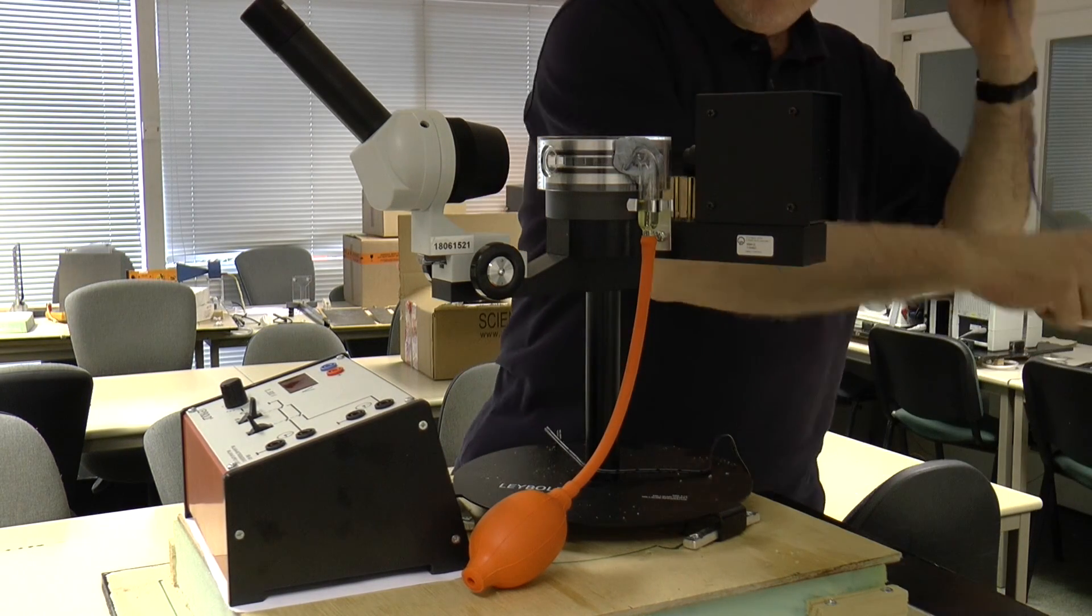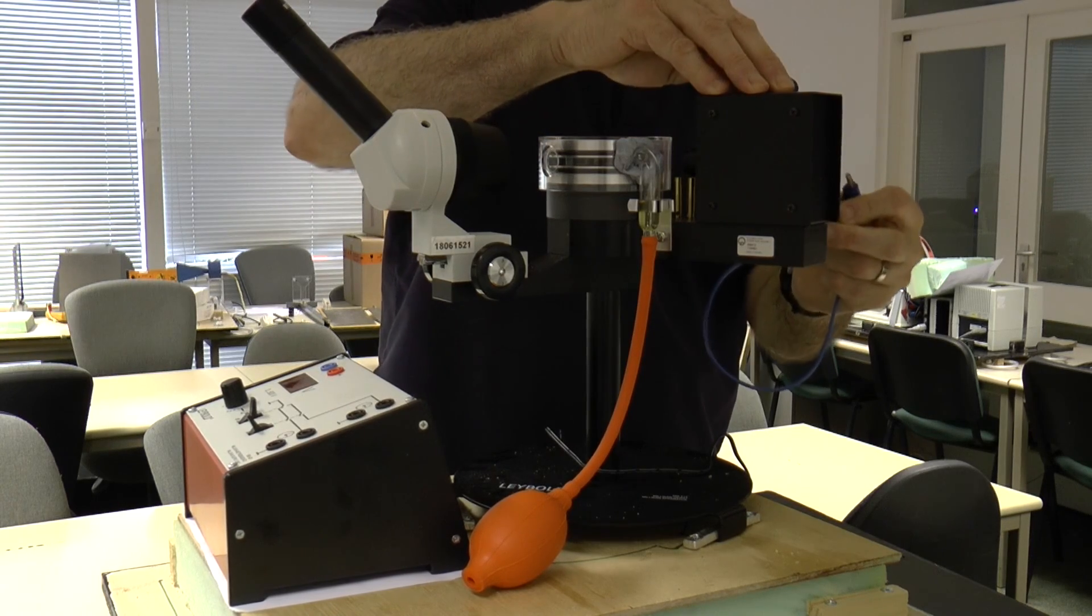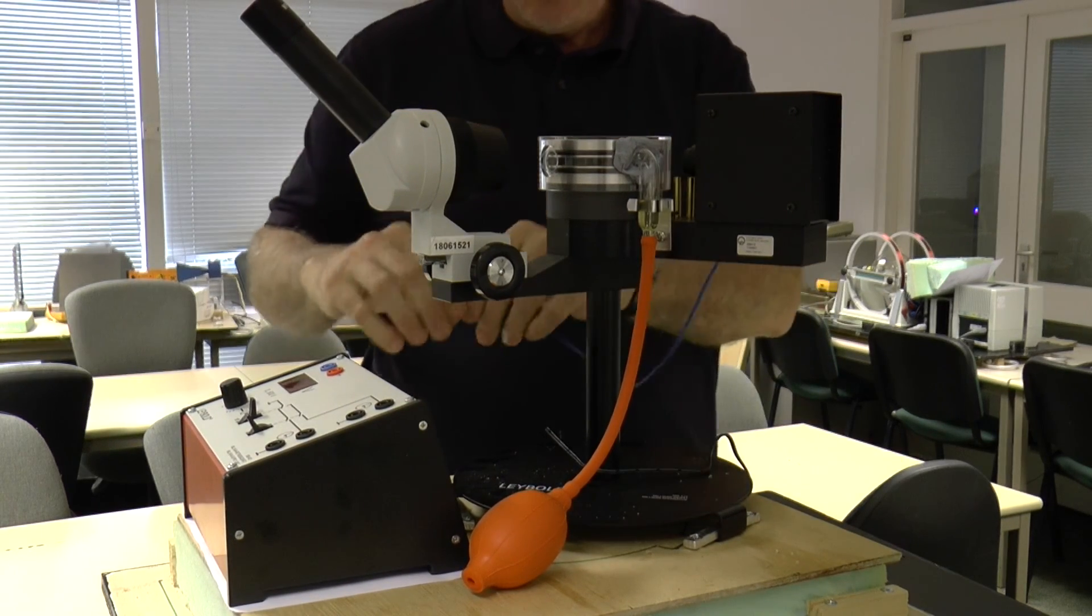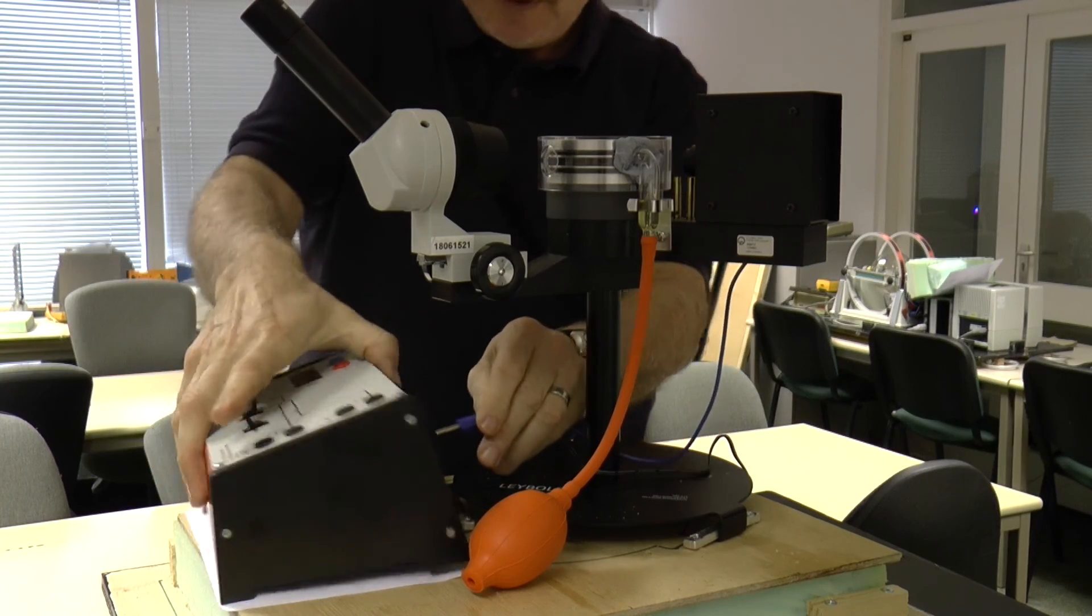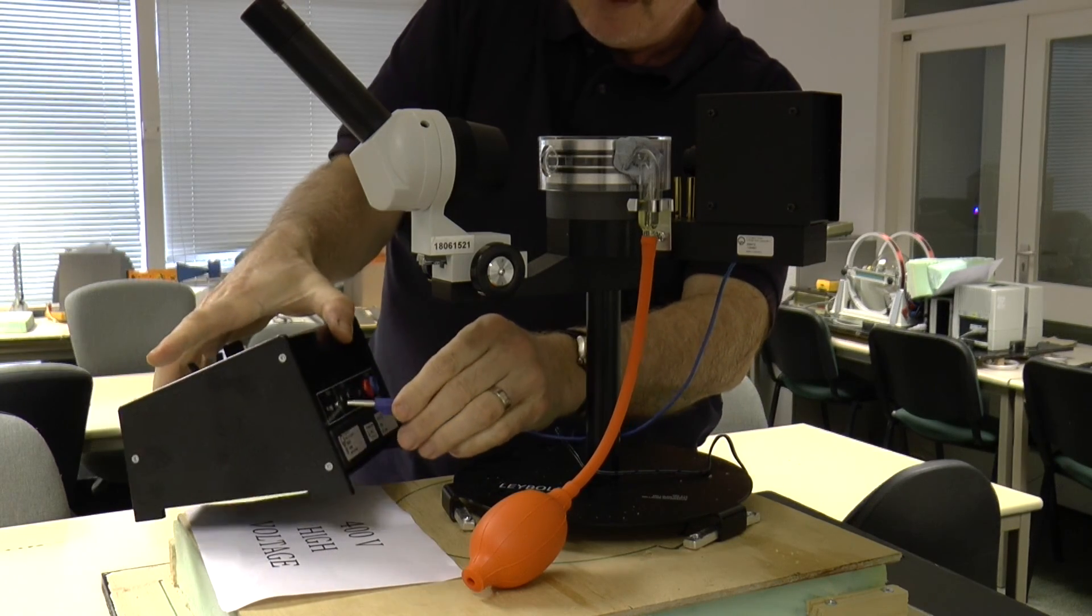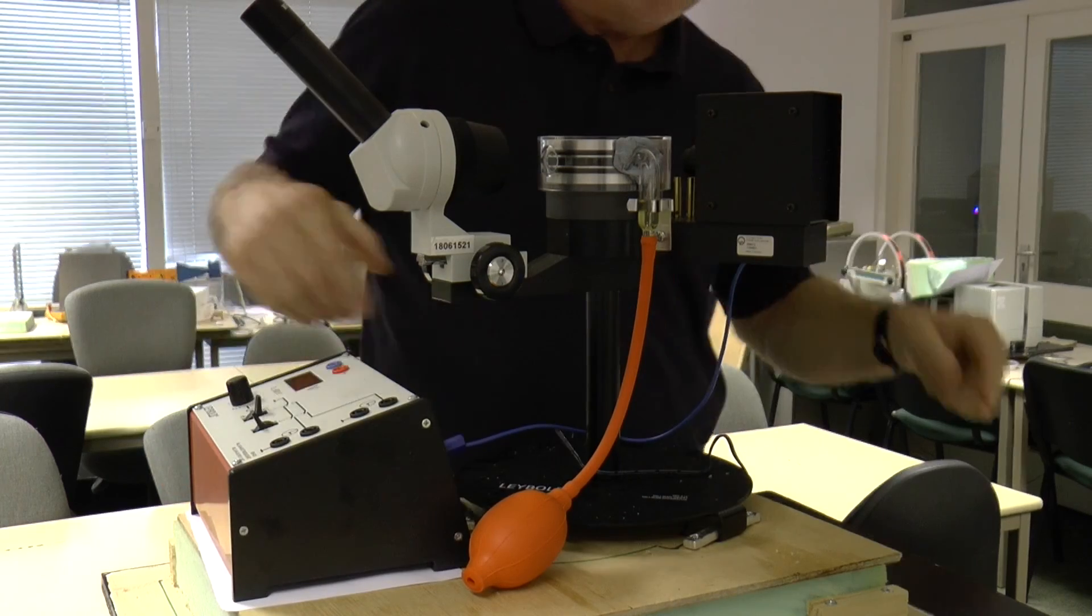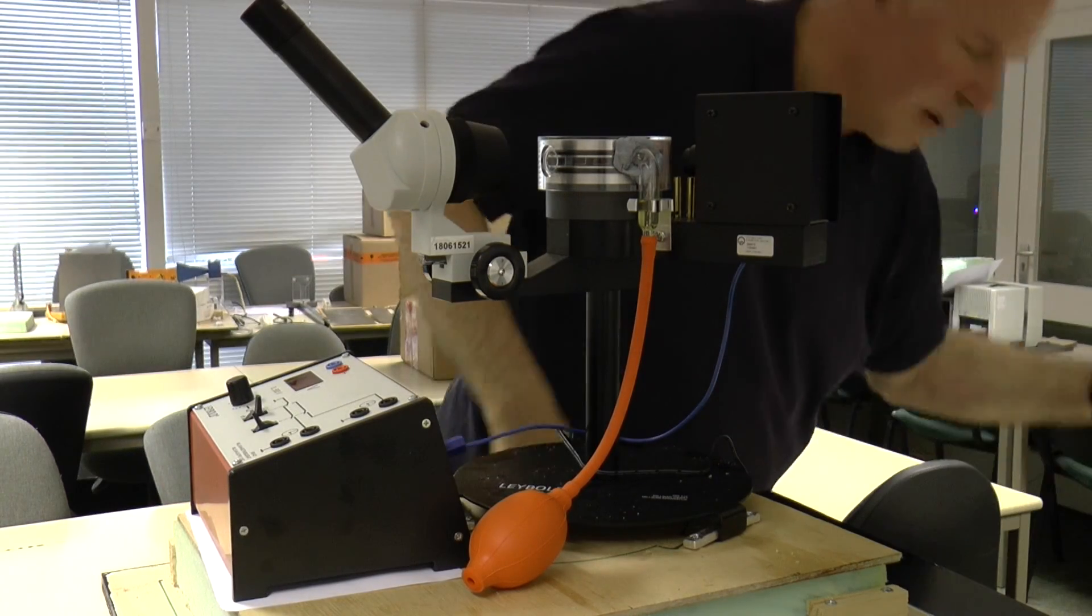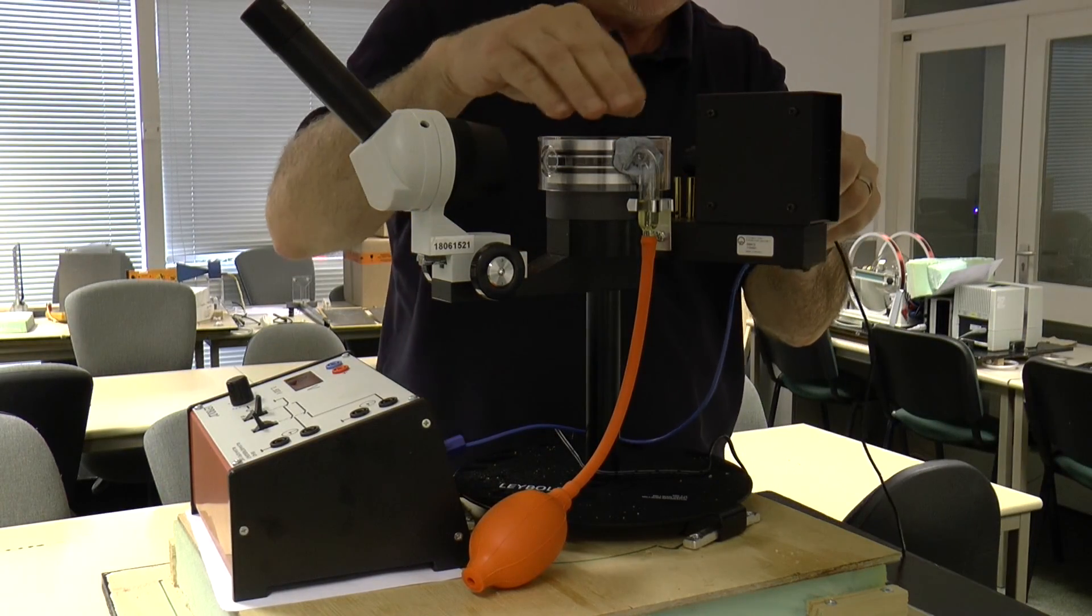First of all, you take the connections from the back of the lamp and they go into the back of the lamp here. 12 volts. It says 12 volts on the side, you can't see it from where the camera is.